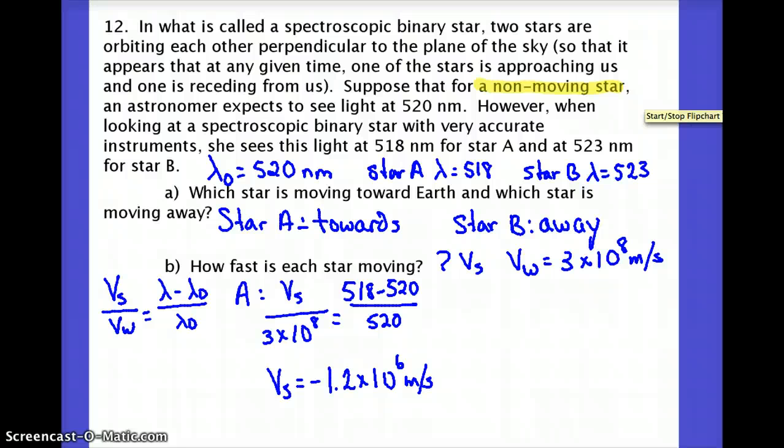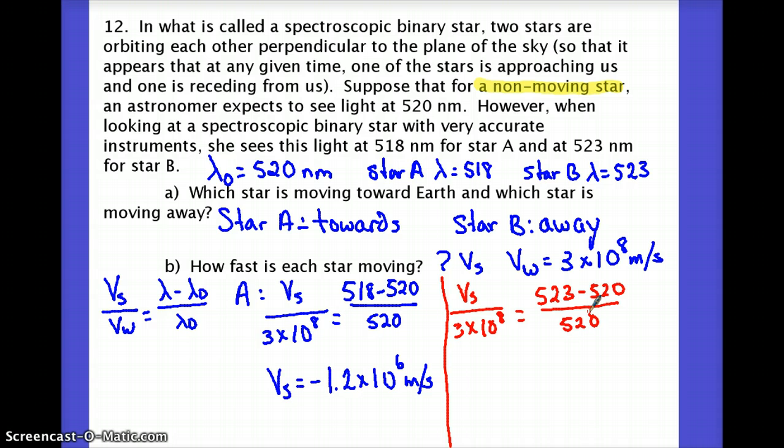I'll switch to a different color for star B just so we can keep it distinct. But, again, you may want to try it on your own just to see if you can do it before you watch everything I'm doing. So, solving for this one, Vs is about 1.73 times 10 to the 6th meters per second. Notice that, ignoring the negative, this one has a bigger speed than that one. And you can also see that its wavelength is shifted more. For star B, the wavelength was shifted by 3. Whereas for star A, it was shifted by 2. So, the more the wavelength is shifted, the bigger the speed is going to be.